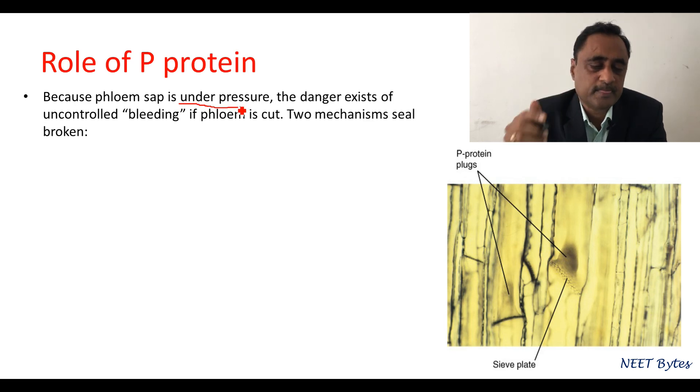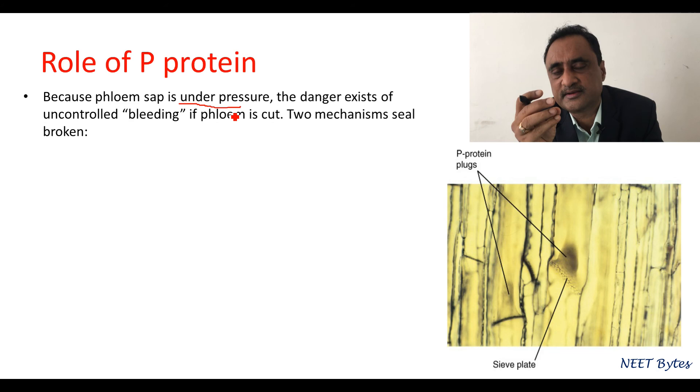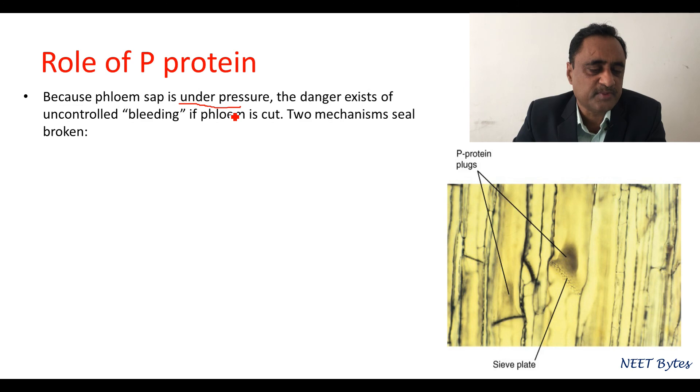What does P-protein do? The P-protein is a large mass that moves to the cut area and forms a mesh-like structure in which the rest of the material gets entangled and finally bleeding is stopped. This is how P-protein acts. We popularly call them P-protein plugs. P-protein is present in all dicots.